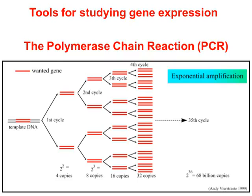هذه الدورة التي شرحتها — في الدورة الأولى من القالب، سيتم إنتاج نسختين. وبعد الدورة الثانية، من كل نسخة سيتم إنتاج نسختين، وهذا تضخيم أسي (exponential amplification)، يعني 2 أس 2 = 4، لأننا بدأنا بـ2. ثم 2 أس 3 = 8 في الدورة الثالثة، و2 أس 4 = 16، وهكذا — 2 أس 36 يساوي 68 مليار نسخة.